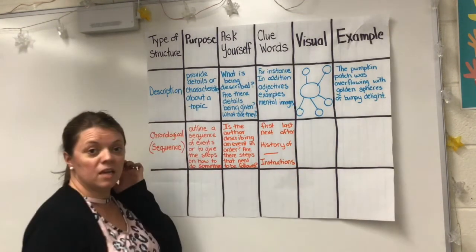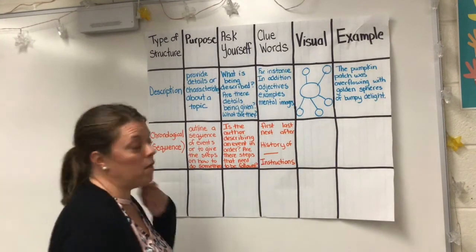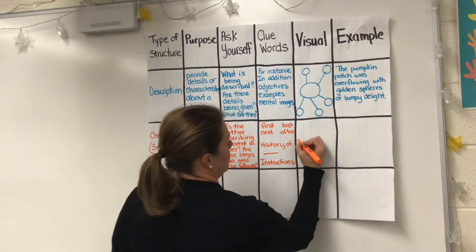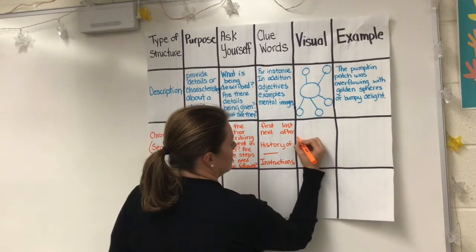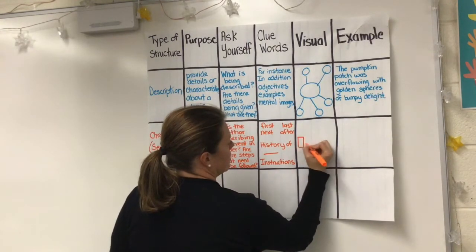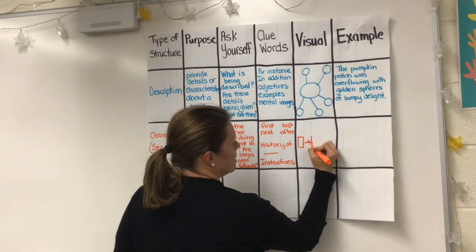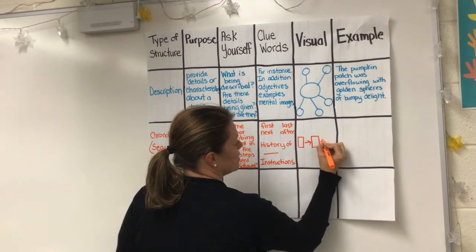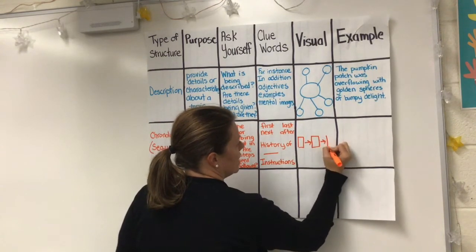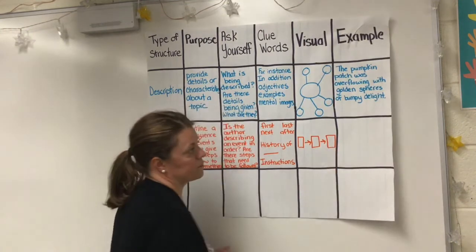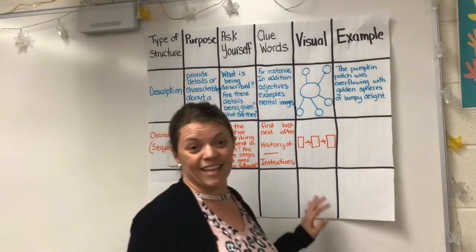When we think about our visual, we think of it kind of like a timeline — giving some information and putting those pieces of information in order.